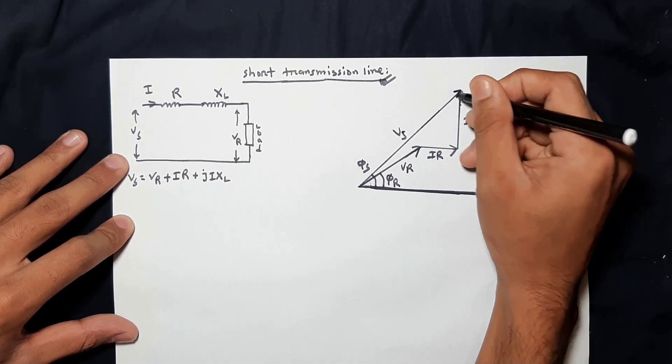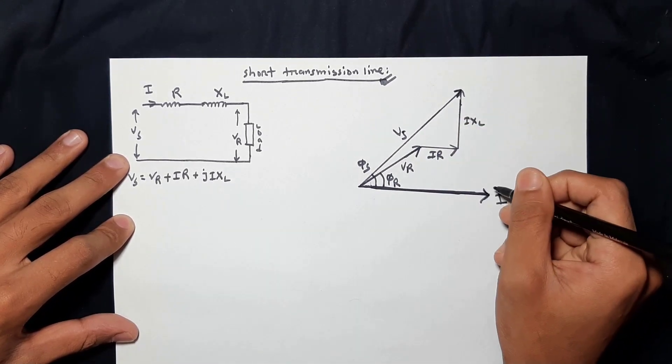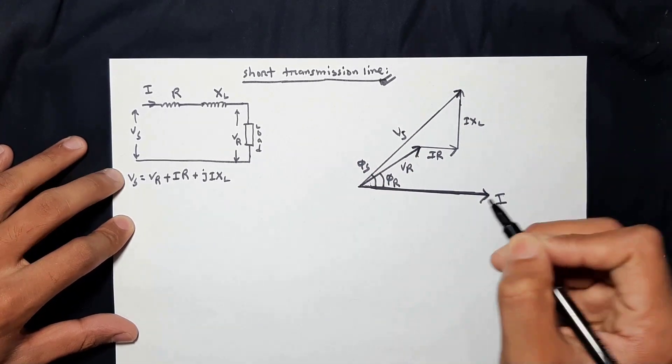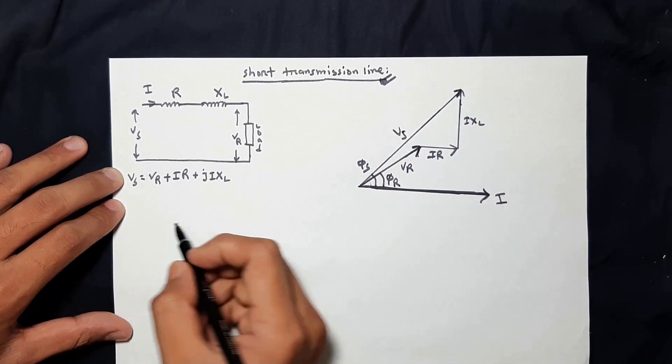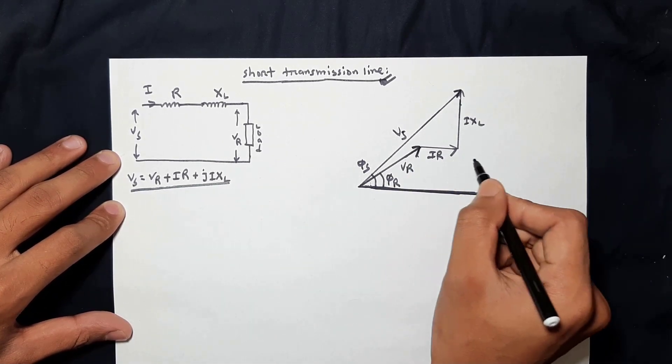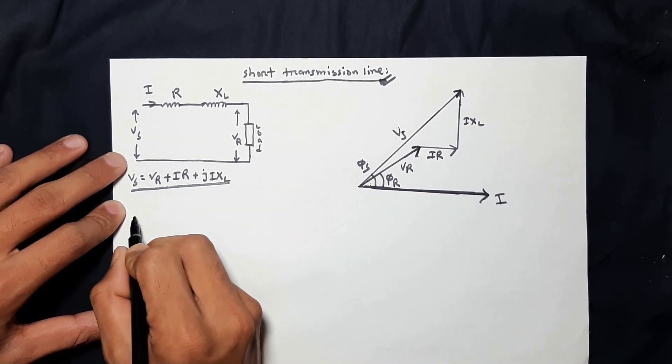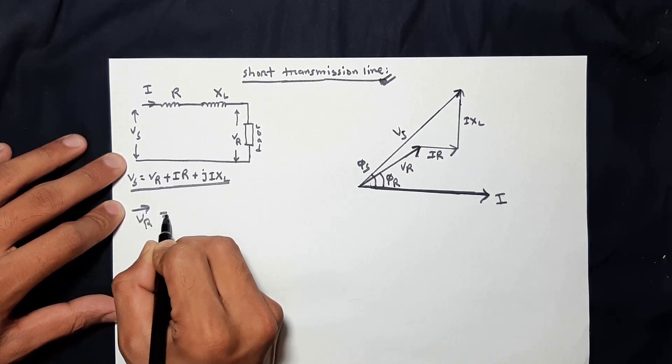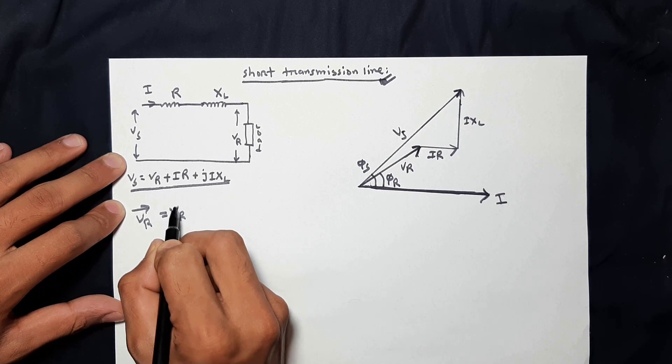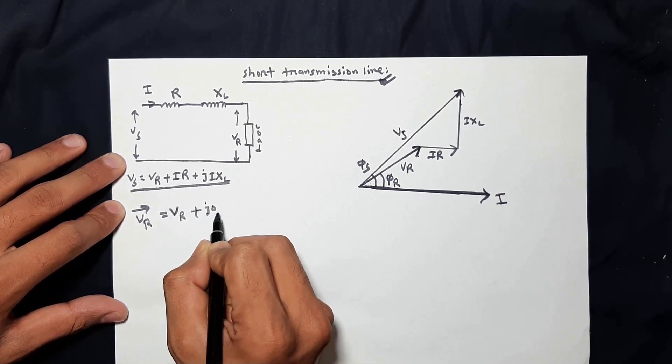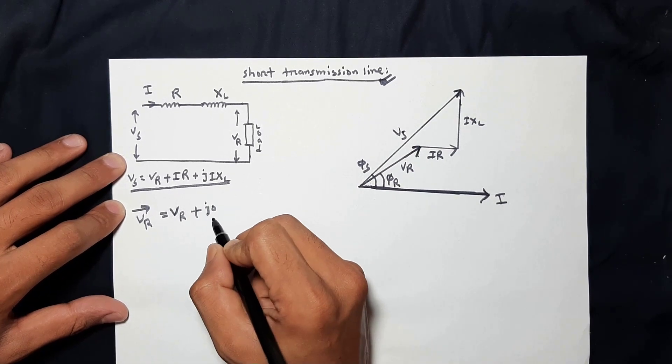We are going to have a phasor diagram. I am going to repeat this. This is the reference to the Vr. This is the Vr vector. This is the reference to the complex form of 0.